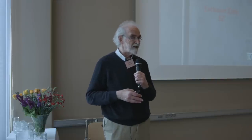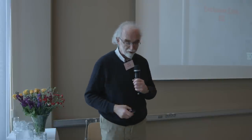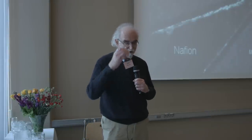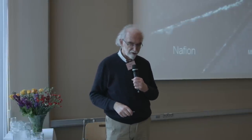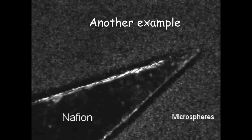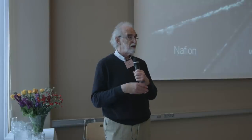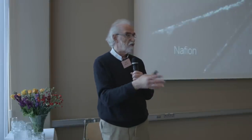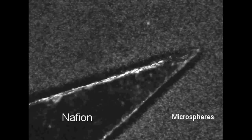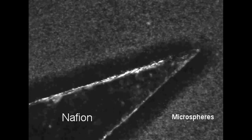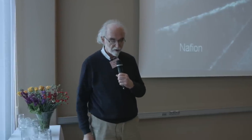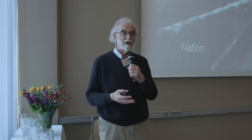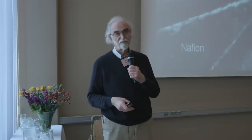We saw this in other preparations as well. Here is a piece of Nafion — a polymer somewhat like Teflon but with charge groups, coming as a thin sheet. We cut out an arrowhead shape, put it in the chamber, poured in water with microspheres, and the same thing happened. The exclusion zone grows so large — almost half a millimeter — that you don't need a microscope to see it with the naked eye.